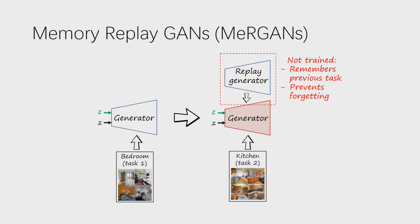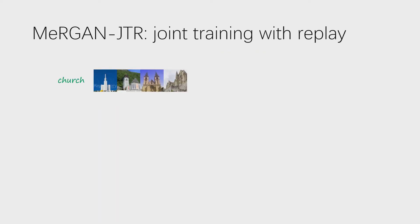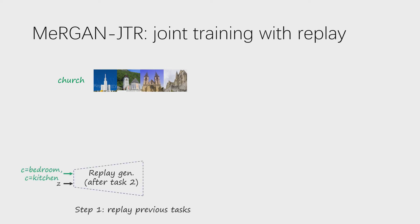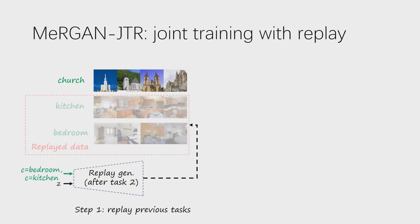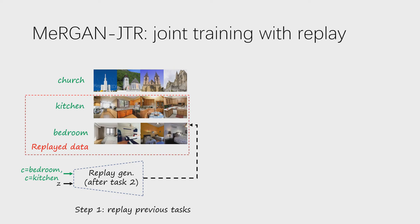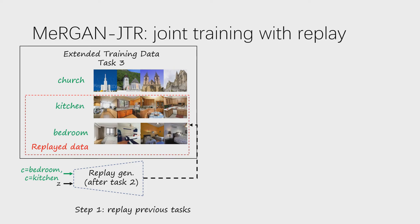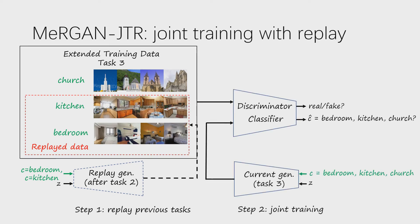We propose two ways to use replays to prevent forgetting. MaGAN using joint training combines the training data of the new task — churches in this case — with replay data from the previous tasks — bedrooms and kitchens in this case — creating an extended dataset. Then the three tasks are trained jointly using this extended dataset, just as in the typical conditional GAN.